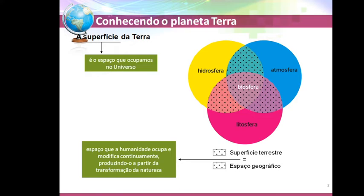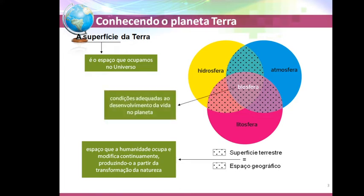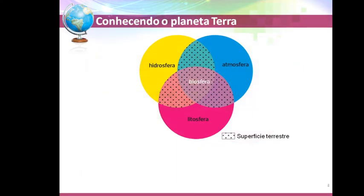A biosfera proporciona as condições adequadas ao desenvolvimento da vida no planeta. A junção da litosfera, hidrosfera e atmosfera proporciona condições adequadas ao desenvolvimento da vida — ou seja, forma a biosfera. Esses três elementos principais, junto com a biosfera, precisam de energia: eles absorvem energia do planeta Terra e também liberam essas fontes de energia. Vocês podem acompanhar na apostila, na página 7, onde fala sobre os sistemas da Terra e a interação recebendo energia.